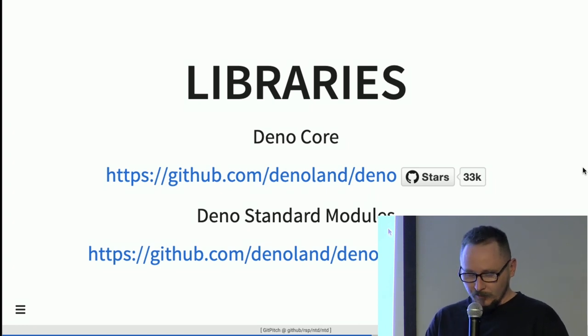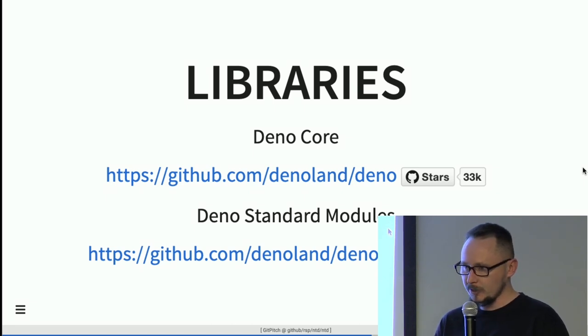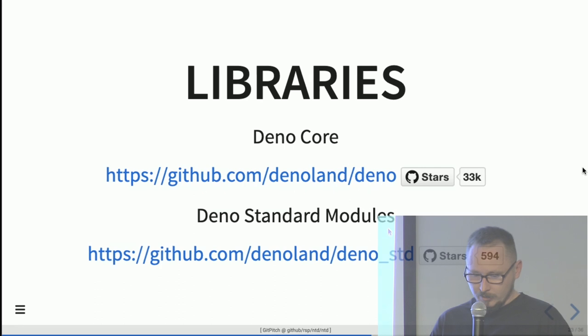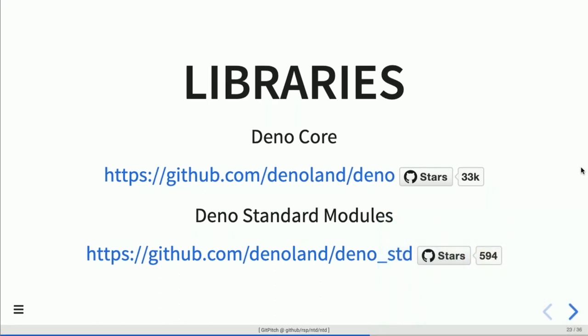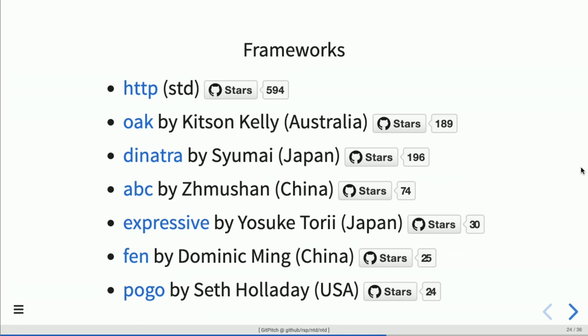What about libraries you can use? We have Deno core and the Deno standard modules — required with 'std'. I'm showing GitHub stars to give an impression of the popularity of these libraries, and especially how early-stage they are. There are already quite a few web frameworks; HTTP is built in as a standard module, and there are six other frameworks. Interestingly, a lot of development in Deno right now is coming from China and Japan — some GitHub issues are even written in Chinese.